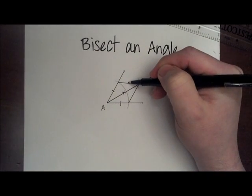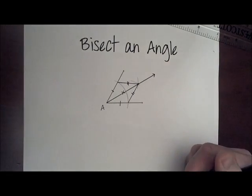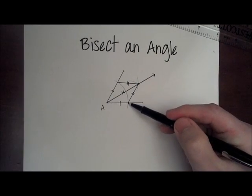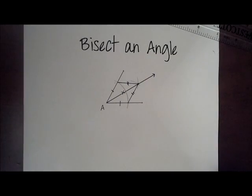And secondly, these are radii of congruent circles that we drew when we measured from this point out to here, and this point out to here. We didn't change our compass, so those have to be equal.